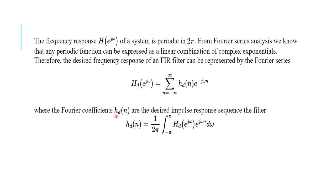The Fourier coefficients hd(n) are the actual desired impulse response sequence of the filter. To find hd(n), the inverse formula is: hd(n) = (1/2π) · integral from −π to π of hd(e^jω) · e^(jωn) dω. This is the formula to obtain hd(n).